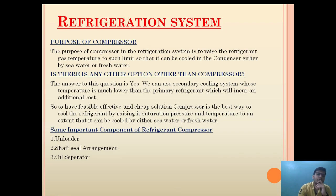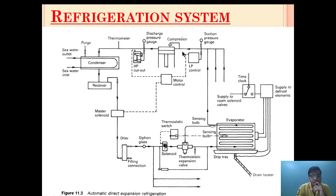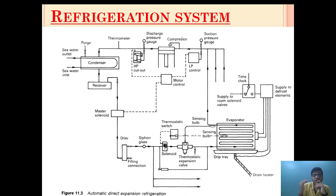Now let's see the main functions of the compressor — why the compressor is provided. The purpose of the compressor in the refrigeration system is to raise the refrigerant gas temperature to such a level that it can be cooled in the condenser either by sea water or fresh water. To make sure that the refrigerant saturation pressure and temperature can be raised to such a level that it can be cooled by the cheaply available sources such as sea water or fresh water — that is why the compressor is provided in a refrigeration system.